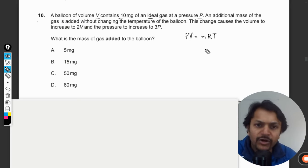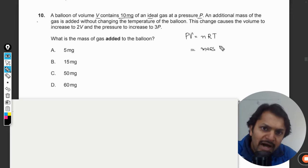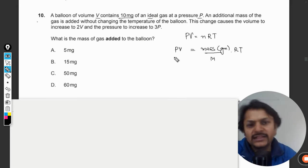N is the number of moles. Number of moles can be written as mass of gas in grams divided by the molar mass, into R, into T. And this is P and this is V.